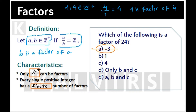Let's go ahead with alternative B: 1. Since 24 over 1 is an integer, 1 is a factor of 24. Let's go ahead with alternative C. 24 over 4 is an integer as well, so 4 is also a factor of 24.